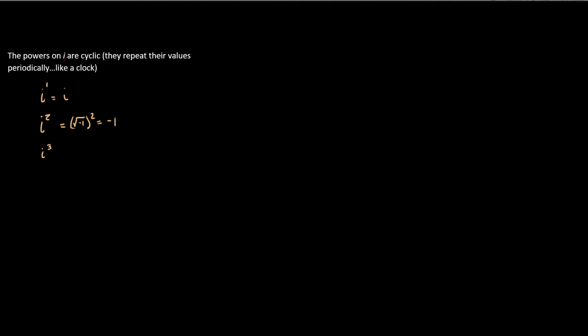If I raise i to the third power, I can remember all of my different rules for multiplying with exponents. That's going to give me i squared times i, which is just negative 1 times i, or negative i. i to the fourth is just i squared squared, which means this is just negative 1 squared, which is positive 1.